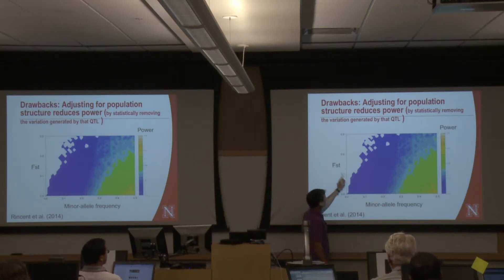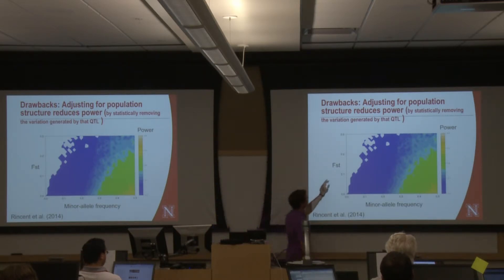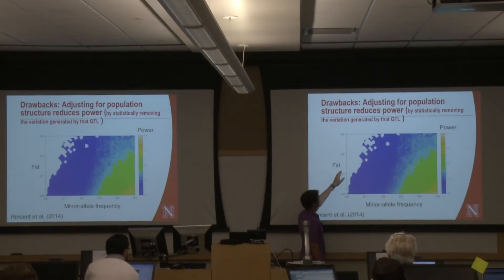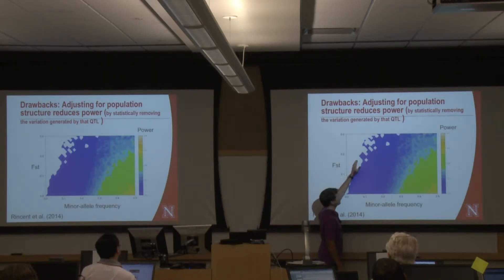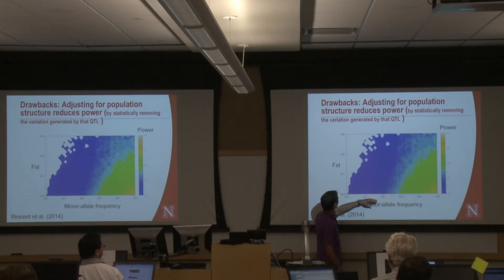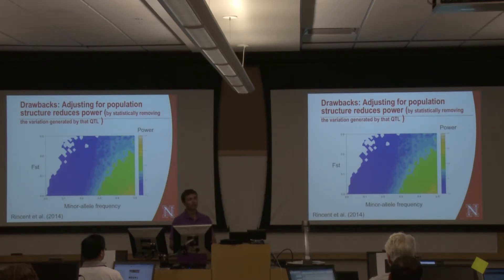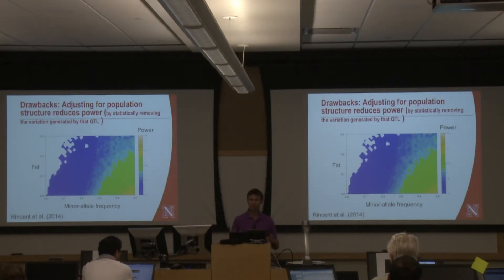As FST increases, your power is reduced — power is represented by colors here, with cool colors being low power and warmer colors being high power. When allele frequency differences between subpopulations are large (high FST), we always have fairly low power. It's not until we have high minor allele frequency and low FST that we have good statistical power to detect our QTL. This is a result of correcting for subpopulation structure in the model — for alleles that are actually different between subpopulations, this correction reduces our power to detect them.